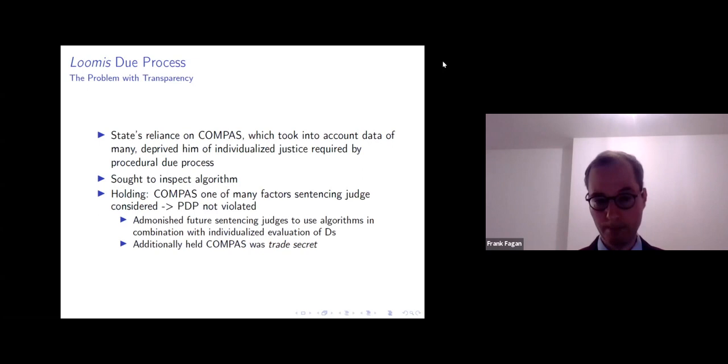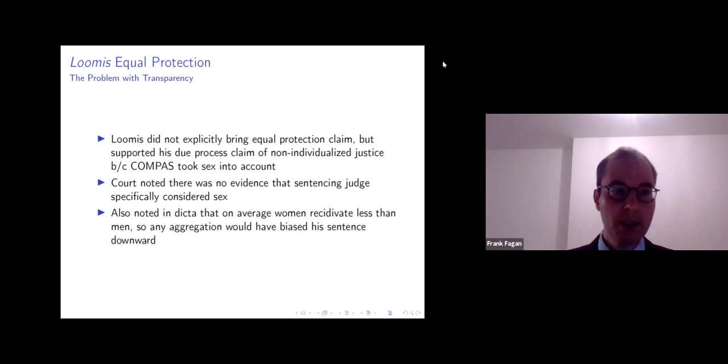And so when the court looked at this, and this went up to the Wisconsin Supreme Court, it was denied certiorari to the US Supreme Court. But Wisconsin looked at this and it said, Compass was just one of many factors that the sentencing judge considered. And because the sentencing judge looked at other factors, including Loomis's individualized criminal history, that his procedural due process had not been violated. And in dicta, it sort of set out a list of best practices for Wisconsin sentencing judges to follow.